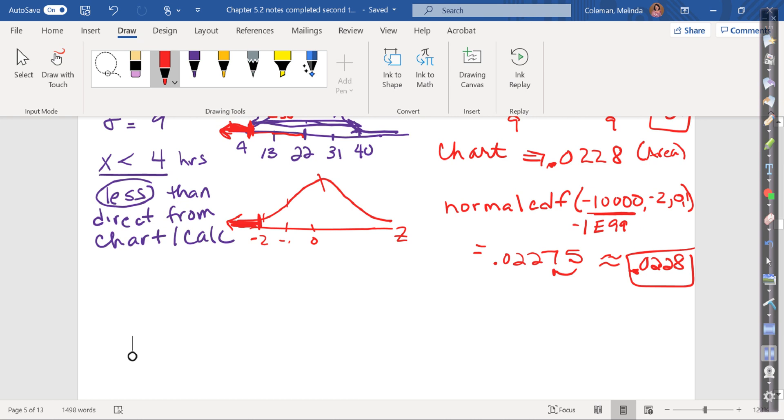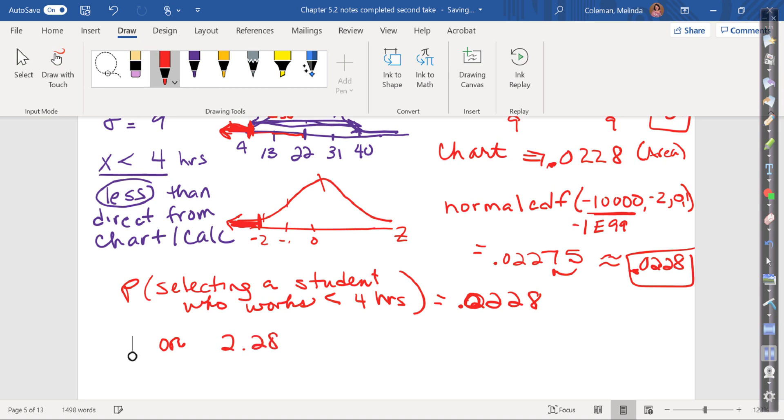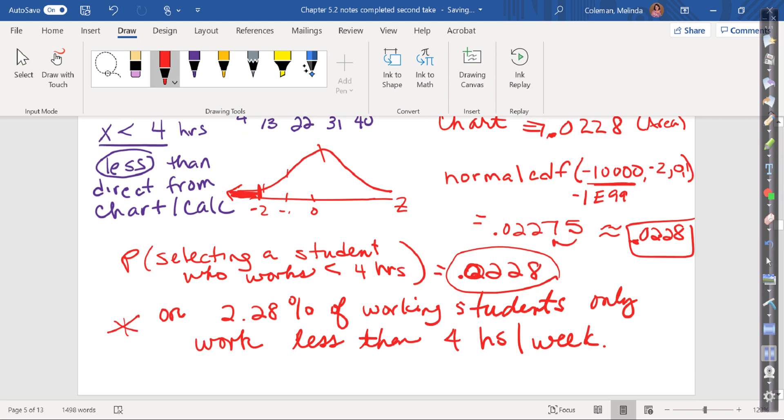So either way, either the chart or the calculator, both will work, it's up to you. So what does this mean? How do we interpret it? The probability of selecting a student who works less than 4 hours equals 0.0228, or 2.28%, or 2.28% of working students - because you have to pick a student who's working - working students only work less than 4 hours per week. So if it's asking you for the probability, this would be your answer. If it's asking for an interpretation, this would be your answer. You have to read carefully as to what it's asking you to do.